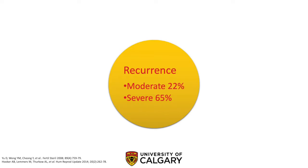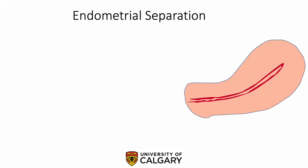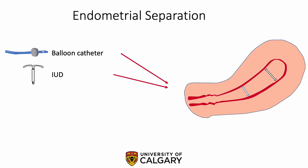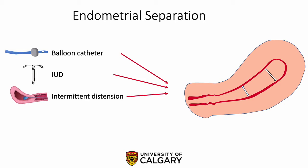The rate of recurrence is reported as high as 22% for moderate cases and 65% for severe cases. In order to decrease the rate of recurrence, two important concepts are of interest. First, the endometrium should be separated to avoid agglutination. The most commonly used and our preferred approach is the placement of an intrauterine Foley catheter for seven days. While evidence is limited, placement of an IUD has also been described. A less common method is intermittent distension of the cavity every one to two weeks with office hysteroscopy.